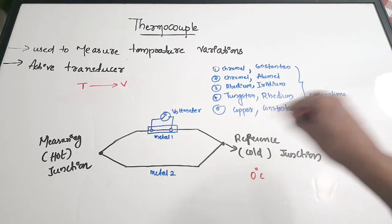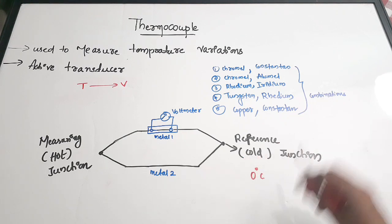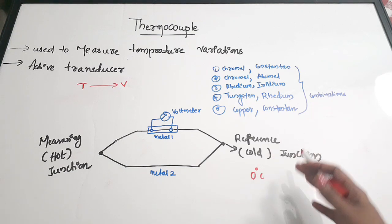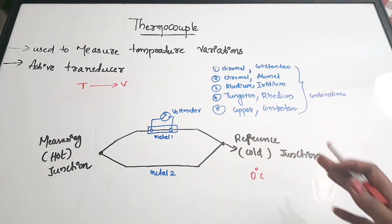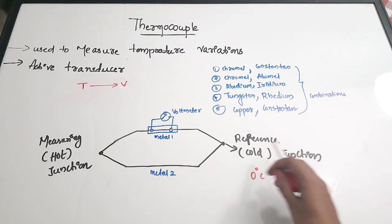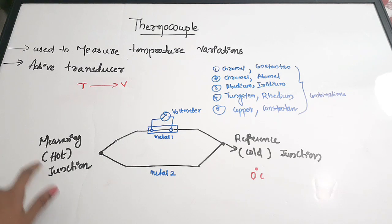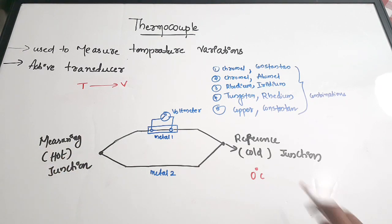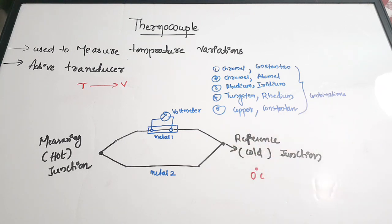Junction 2 is the reference junction, called the cold junction. It is generally kept at 0 degrees Celsius so that it is easy for measurement. The measuring junction is the hot one, and the cold junction is kept at a relatively lower temperature — 0 degrees most of the time.